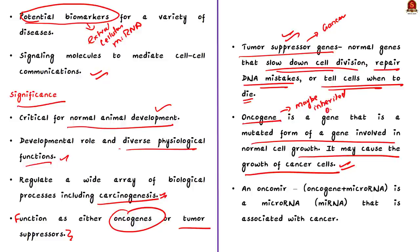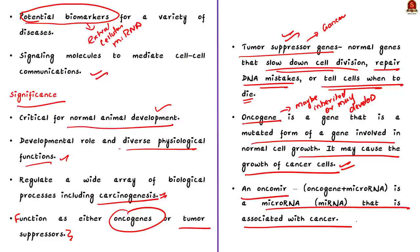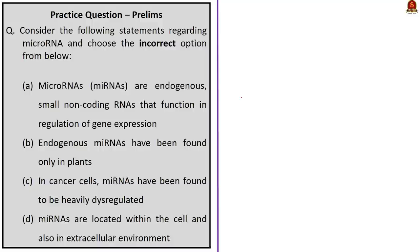An oncomir is a microRNA that is associated with cancer. With this, we have seen some basic details about microRNA. This will be very useful for your prelims perspective. Let us conclude this discussion and take up the next article.